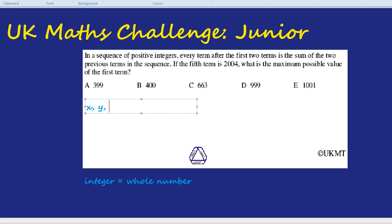What would the third term be? It's the sum of the previous two terms, so it would be X plus Y. Can you guess what the next term would be? The next term would be X plus Y plus the Y, so it's X plus 2Y. How about the next term? X plus 2Y, add the X plus Y. That's 2X and 3Y.